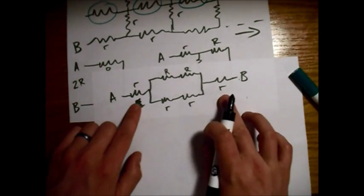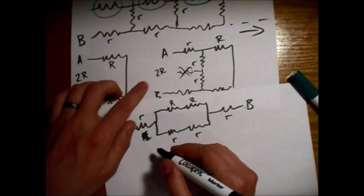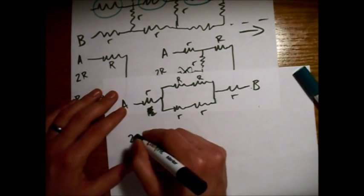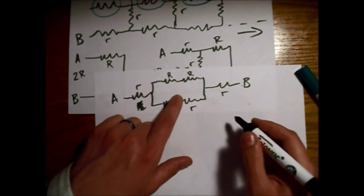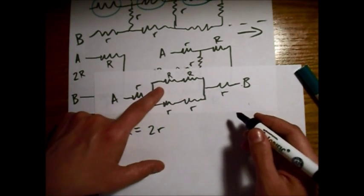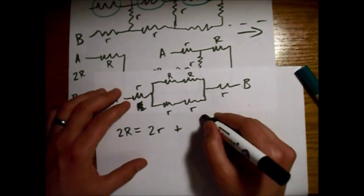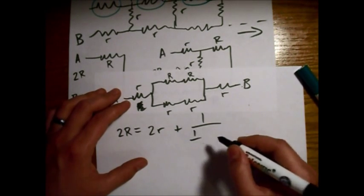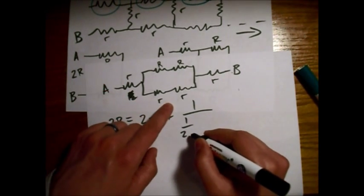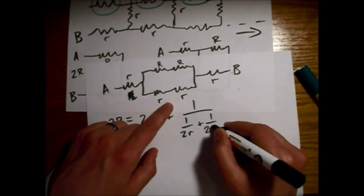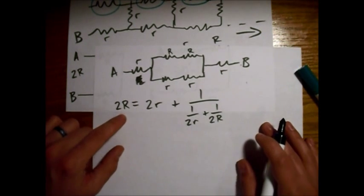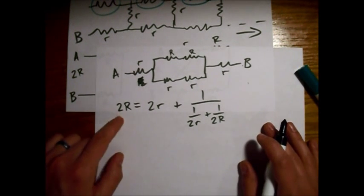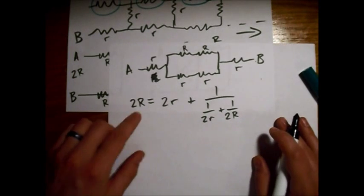The total resistance, which we know is 2R, is going to be equal to the two series resistors, plus the parallel combination — that's 1 divided by (1 over 2r) plus (1 over 2R). Now we just have to solve this equation for big R to find out what 2R, the equivalent resistance of the whole infinite chain, is.